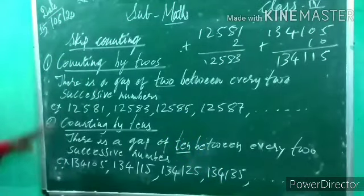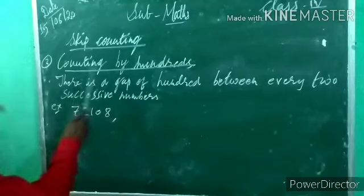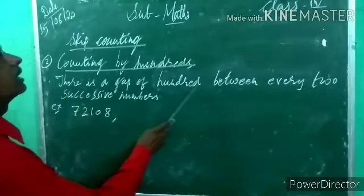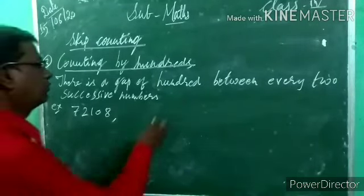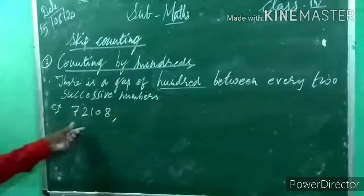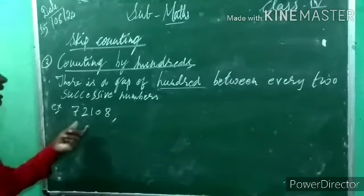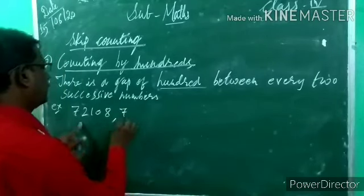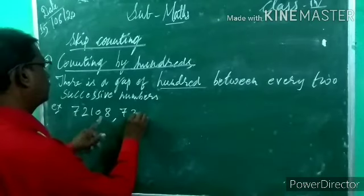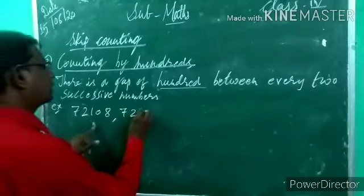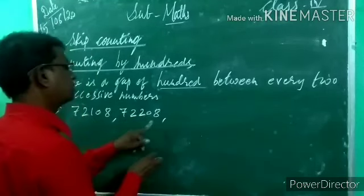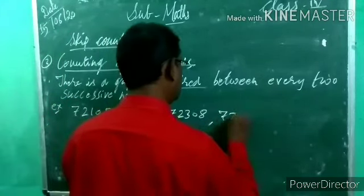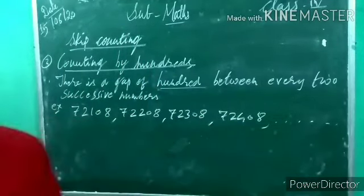Write this in your notebook. Third: counting by 100s. There is a gap of 100 between every two successive numbers. For example, the 5-digit number 72,108: 72,108 plus 100 is 72,208; plus 100 is 72,308; plus 100 is 72,408; plus 100 is 72,508, and so on.